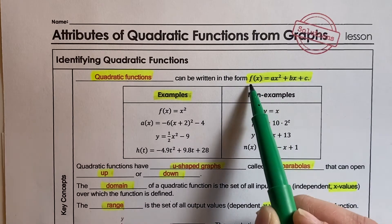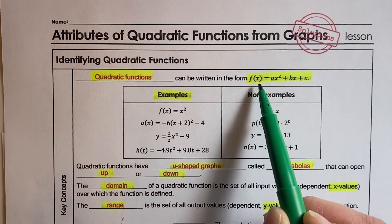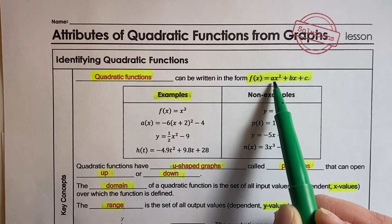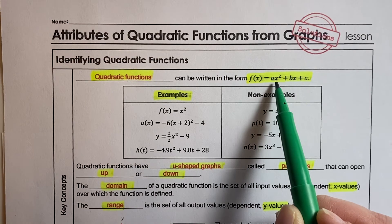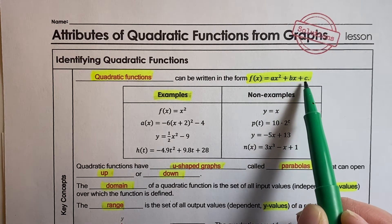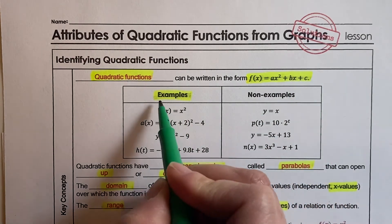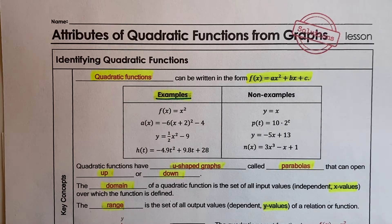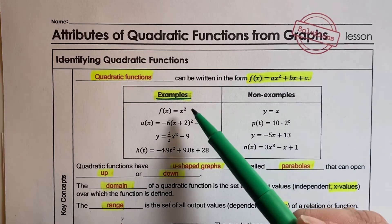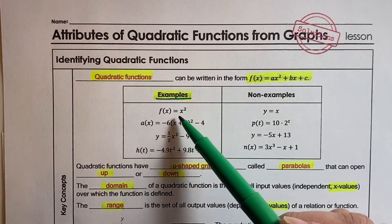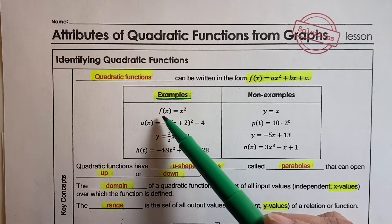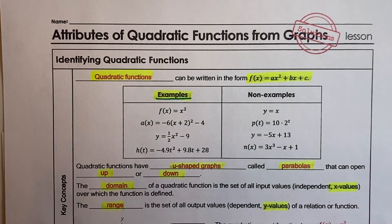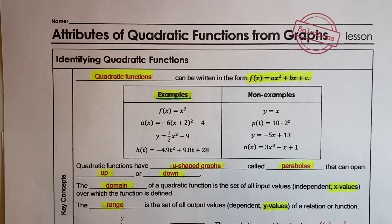f of x is the same thing as y. a is a coefficient of x squared, b is a coefficient of x, and c is your constant. Some examples of quadratic functions are f of x equals x squared, which is the same thing as y equals x squared, and a of x equals negative 6 times the quantity x plus 2, squared, minus 4.